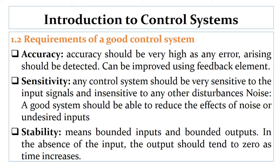We are going to discuss the requirements of a good control system — around four to six requirements. Number one is accuracy. Accuracy determines the degree to which an actual control process approaches the desired process. Accuracy should be very high as any error arising should be detected. It can be improved using the feedback element, where the input and output are compared.